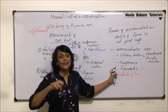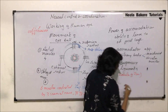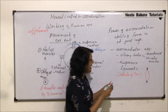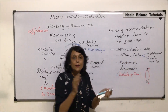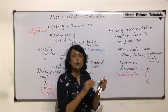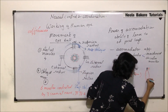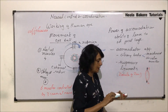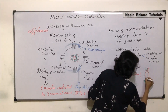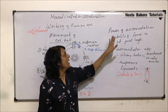The suspensory ligaments, when they contract or relax, pull the lens. If the suspensory ligaments stretch or pull, the lens becomes a little thinner and its convexity decreases, changing the focal length. If they relax, the lens becomes more convex, again changing the focal length. So the ciliary body and suspensory ligaments together help in accommodation so that the image is always formed on the retina.